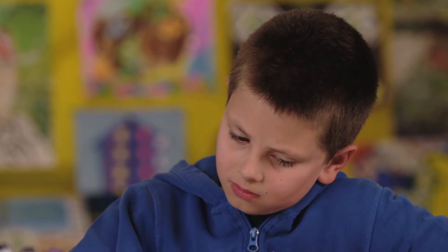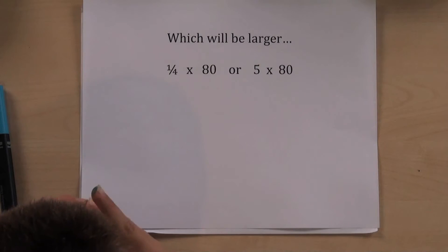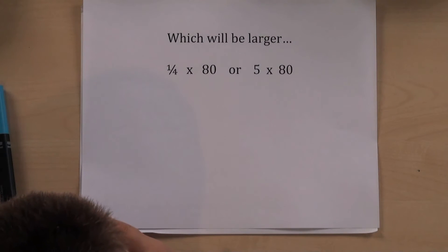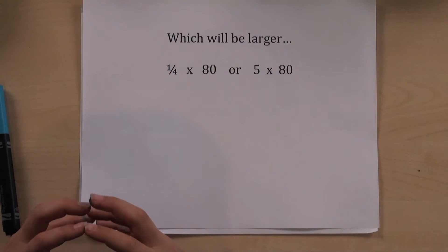Without actually doing the multiplication, your child should be able to tell you which will have a larger answer. 5 times 80 would be larger because the answer would be still bigger than 5 and 80.